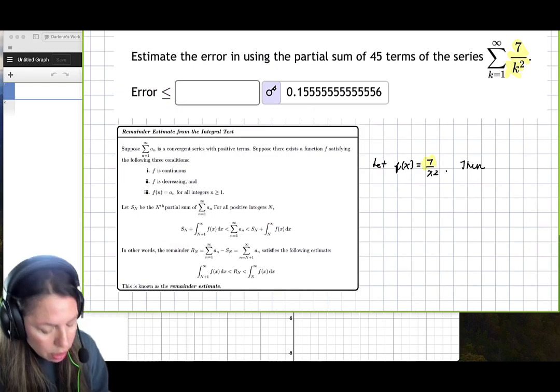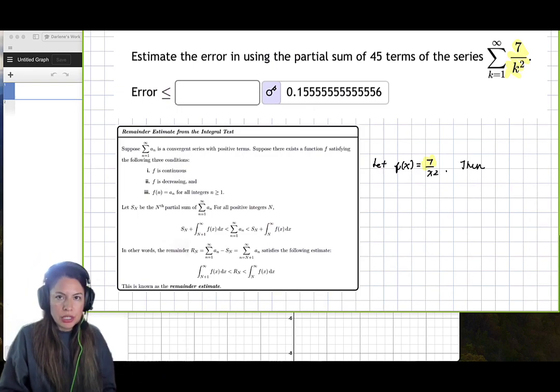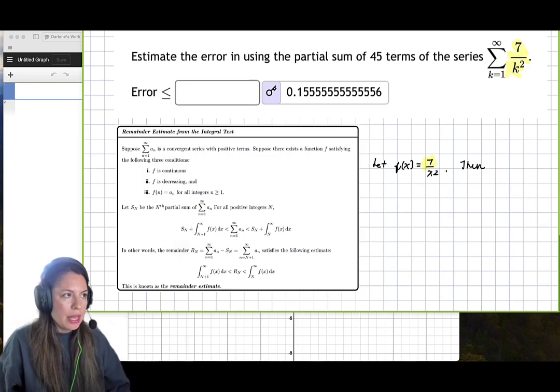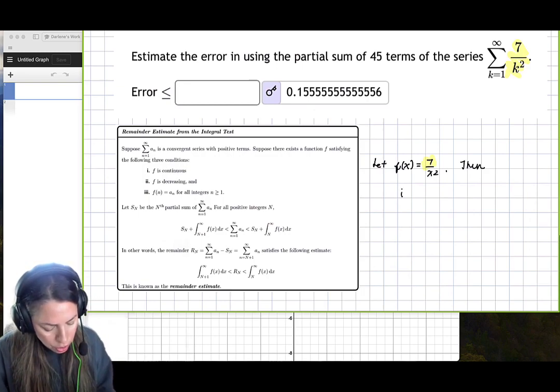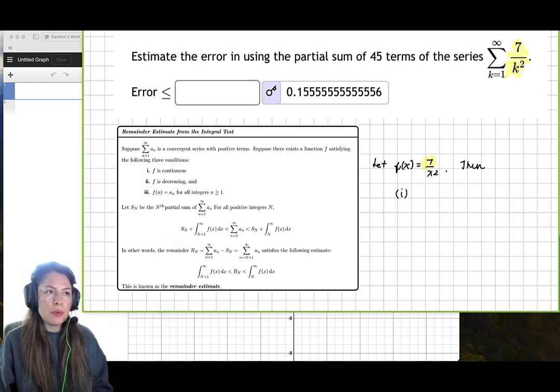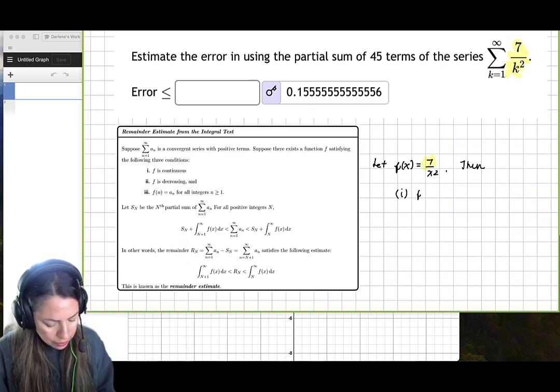So it's going to be 7 over x squared. Then we can go ahead and talk about the conditions since the conditions discuss it in terms of f. We do know 7 over x squared is continuous, so f is continuous.